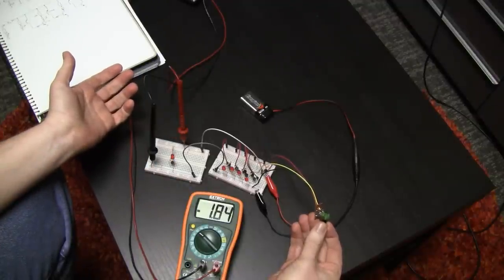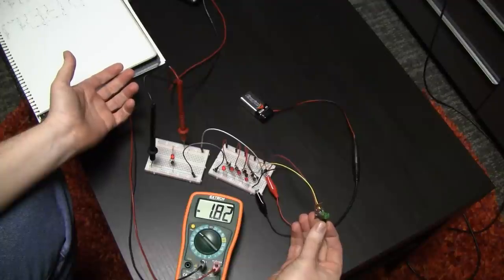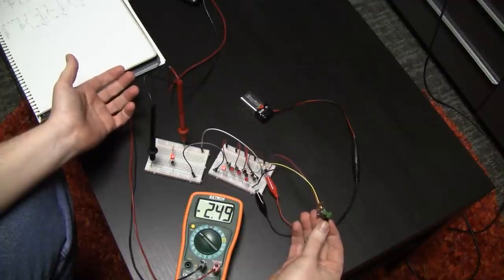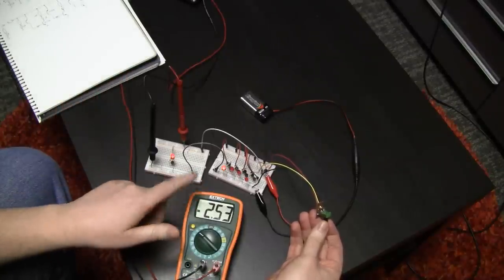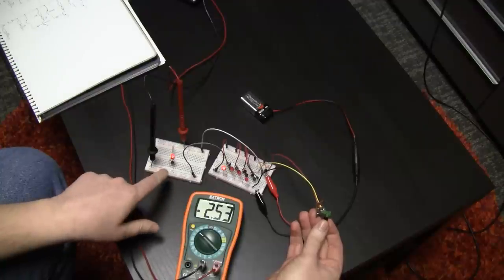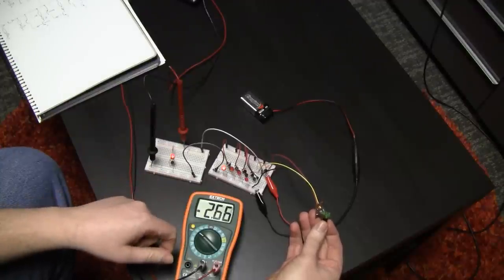But once we get to about 1.5, 1.8V, those LEDs start to turn on. And when we reach about 2.5V, they're running about a milliamp, including the drop across that resistor.